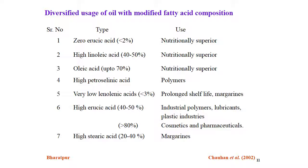Diversified usage of oil with modified fatty acid composition: when modification results in zero erucic acid, the oil is nutritionally superior. Nutritionally superior quality is expected from zero erucic acid, high linoleic acid up to 40 to 50%, and high oleic acid up to 70%. High petroselinic acid is useful for polymer production. Very low linolenic acid (less than 3%) is preferred for increased shelf life or margarines. High erucic acid (40 to 50%) is used for industrial polymers, rubber, lubricants, and plastic industry; more than 80% erucic acid is used for cosmetics and pharmaceuticals. High stearic acid (20 to 40%) is used for margarines.